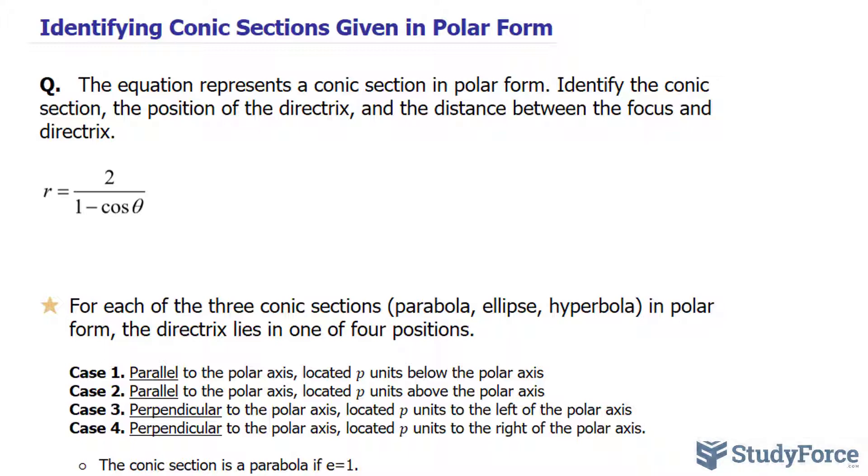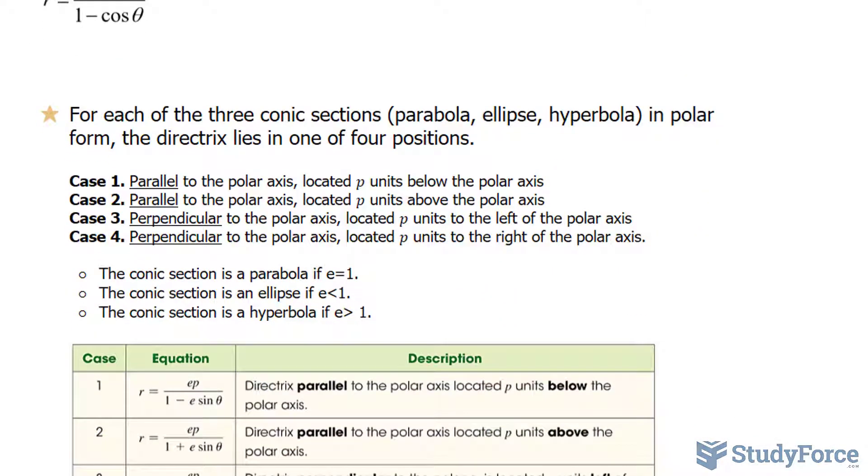And for each of those three conic sections that I mentioned, the directrix lies in one of four positions. And these are the four cases outlined here. Either it's parallel or perpendicular to the polar axis, and the directrix is located p units away from the polar axis.